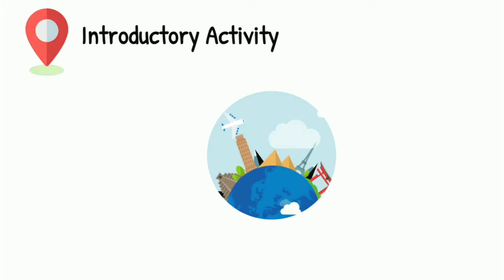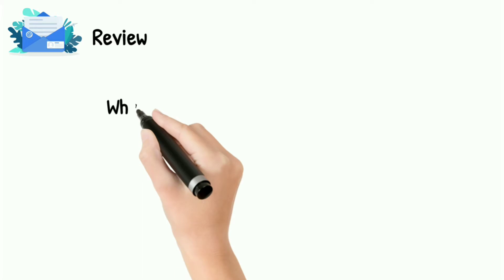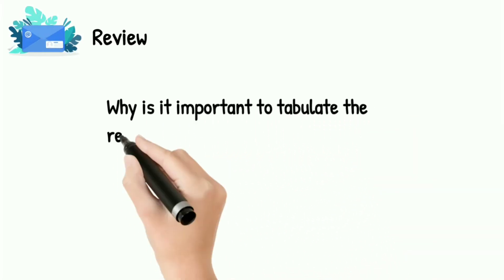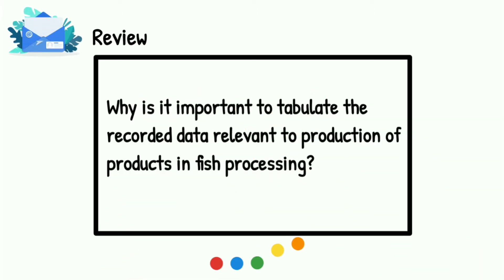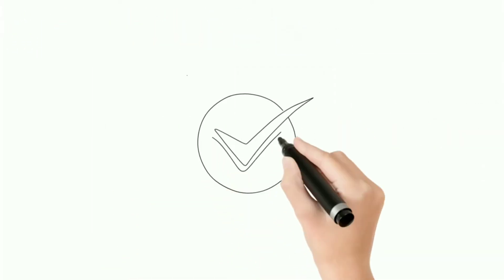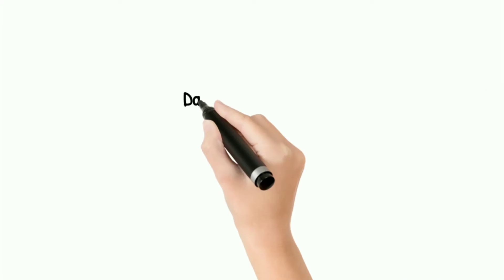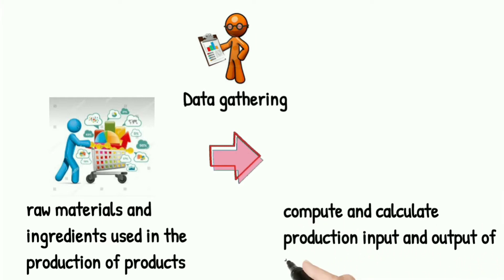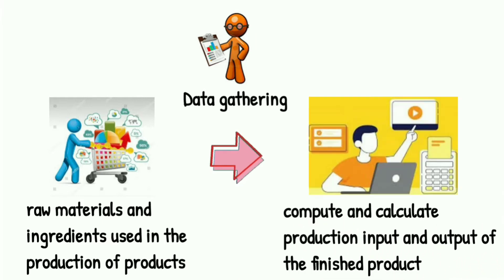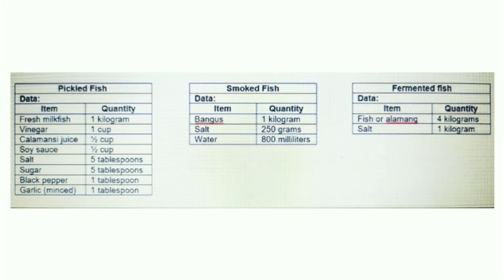Let us begin the introductory activity with a review question. Why is it important to tabulate the recorded data relevant to production of products in fish processing? Data gathering on raw materials and ingredients used in the production of products is necessary in order to compute and calculate production input and output of the finished product. The following are examples of data that are gathered based on the fishery products.